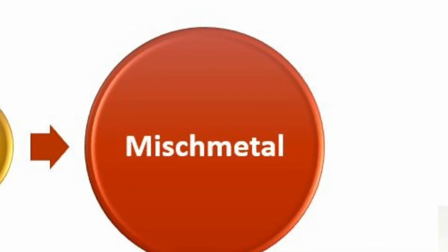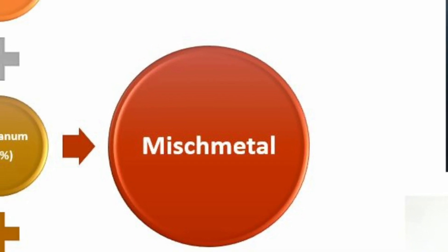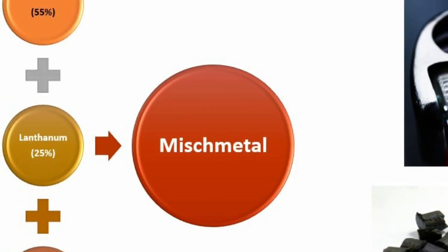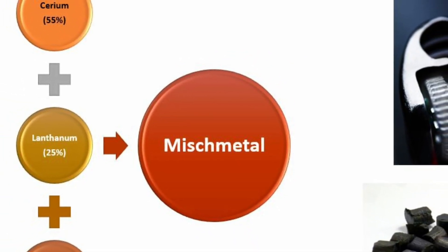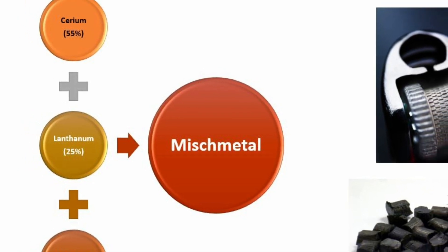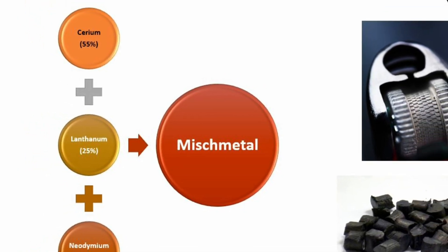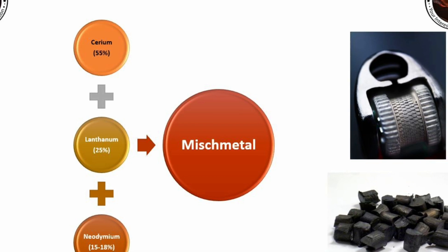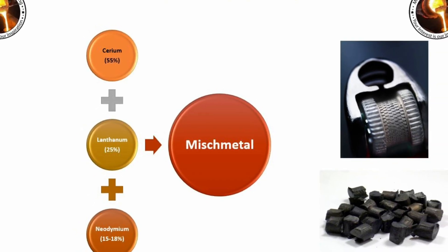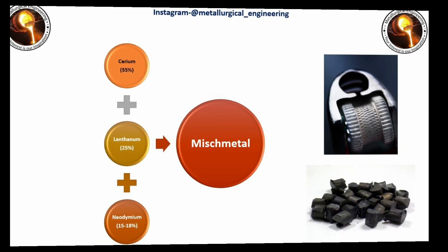Next is misch metal. It is a cerium-based alloy and lanthanum and neodymium are the main alloying elements. The composition of misch metal is 55 percent cerium, 25 percent lanthanum, and 15 to 18 percent neodymium. It is used in cigarette lighter flints.